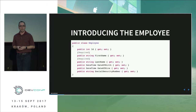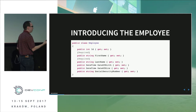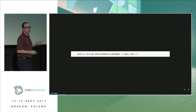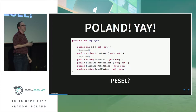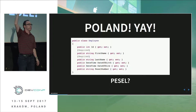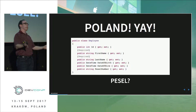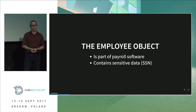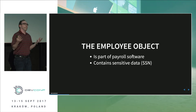I want to introduce you to the employee object. Let's pretend you're working on a payroll system — it's got basic information: ID, first name, last name, and a social security number. But I'm in Poland, so we'll call it the PESL number. Is that sensitive data? Yes — social security numbers in the US are very sensitive. So this example is extra relevant. The employee object is part of a payroll system and contains sensitive data.